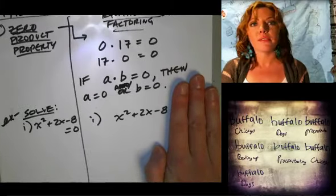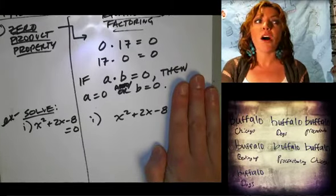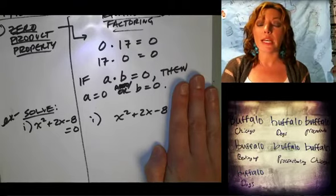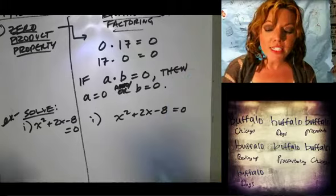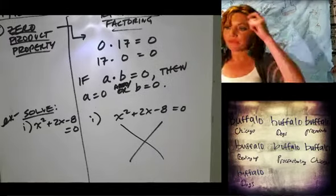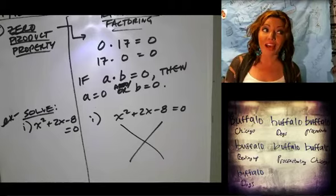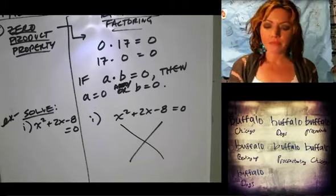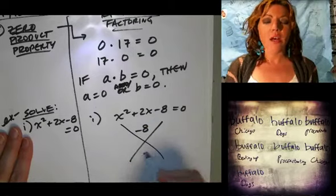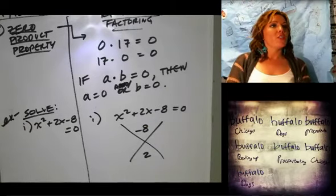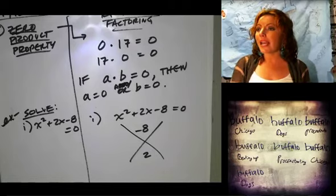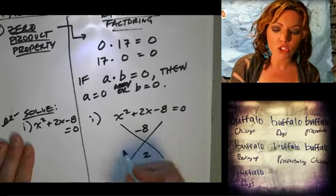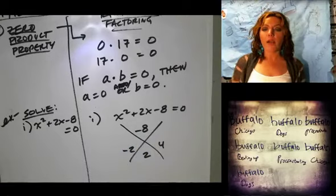x squared plus 2x minus 8. How many people know how to factor that? We all better know how to factor that. We've been spending a bunch of time factoring. What if I draw something to help you all out? Now how many people know how to factor that? What goes in the top? Negative 8. Bottom? 2. So, two numbers that multiply to negative 8 and add up to positive 2. Kendra? Negative 2 and 4. Okay.